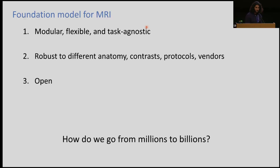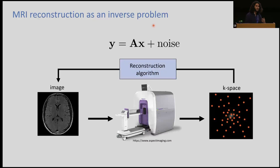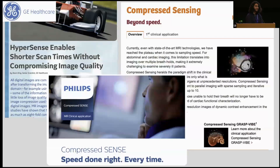How do we go from millions to billions? That's one question I'm not going to fully answer, but hopefully as a community we can figure out. I'll take a step back and talk about the use of foundation models in the context of MRI reconstruction. In the case of MRI, we can think of this inverse problem where an image goes through our MRI machine, gives us k-space measurements, and we want to design a reconstruction algorithm to go back to the image. Compressed sensing has been really popular and successful, implemented across vendors, especially from pioneering work at NYU, now available as products.